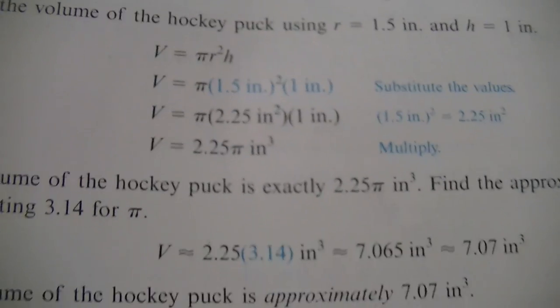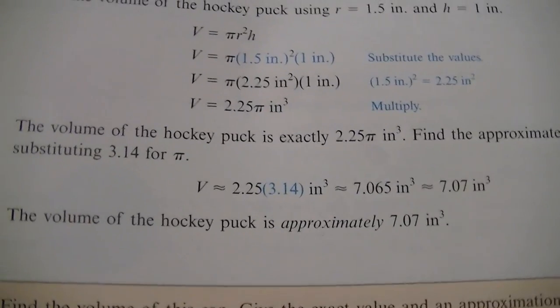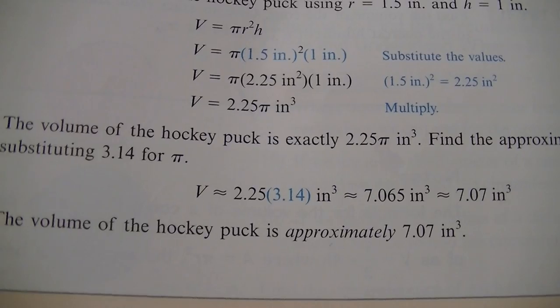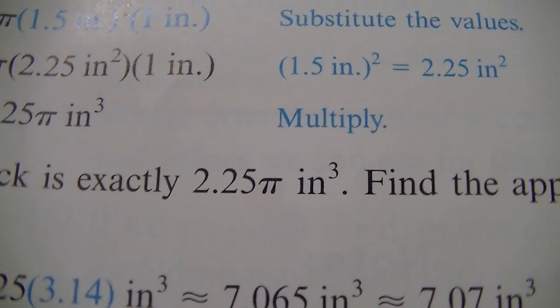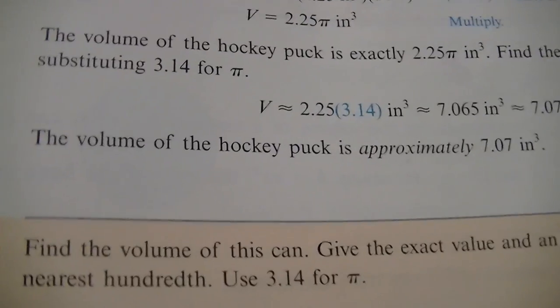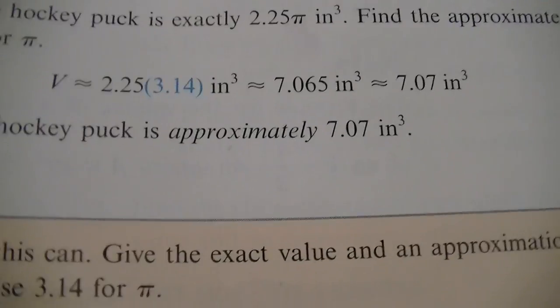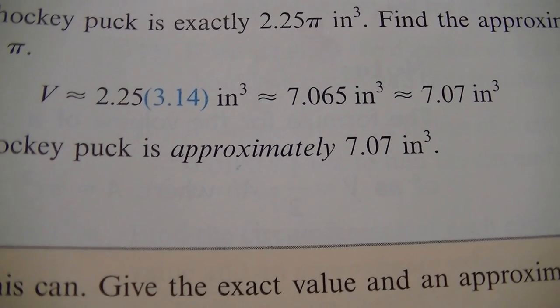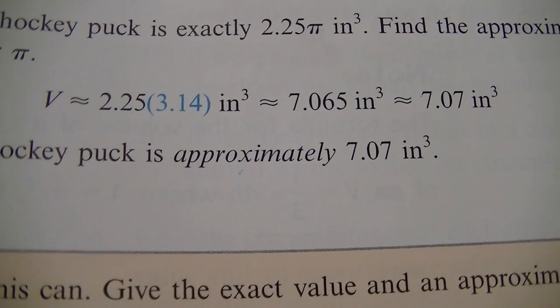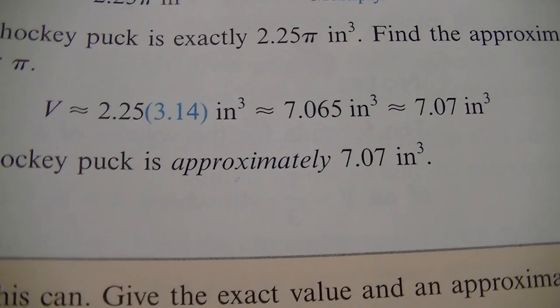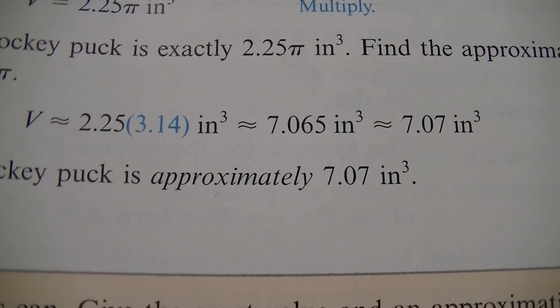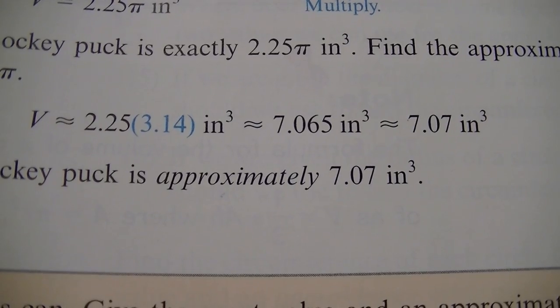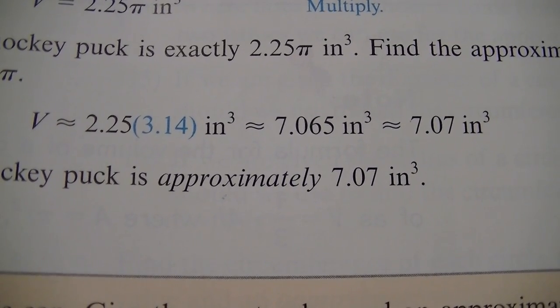What they say to use in this case, 3.14. So the volume of a hockey puck is exactly 2.25 pi inches cubed, because we said inch times inch times inch. So three times gives us inches cubed. Find the approximate value, substituting the 3.14. So we're just going to plug that in where the pi was. So instead of 2.25 pi, we're going to just say 2.25 times 3.14. Our inches cubed is going to stay the same. So multiply that out in your calculator, you get 7.065 inches cubed.